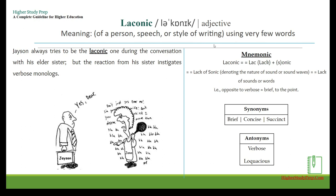Laconic — it's an adjective which means using very few words. For example, Jason always tries to be the laconic one during conversations with his elder sister, but her reactions instigate verbose monologues. The mnemonic: break it as 'lack + onic' or 'sonic' — meaning a lack of sound or words; it is the opposite of verbose, meaning brief and to the point.